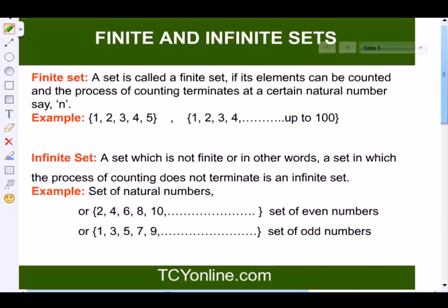Now let's see what are finite and infinite sets. A finite set means a set which has a finite number of elements in it, like elements which can be counted, and the process of counting terminates at a certain natural number, say n. For example, {1, 2, 3, 4, 5}. These are set of finite numbers. Also {1, 2, 3, 4 till 100} is also a finite set.